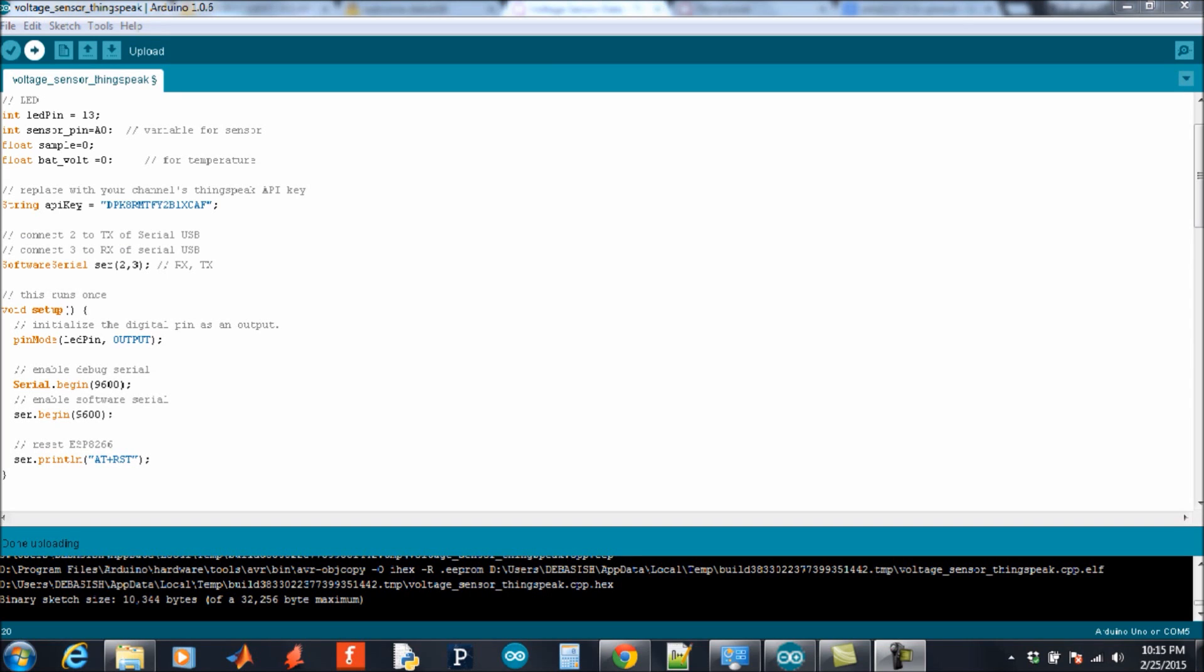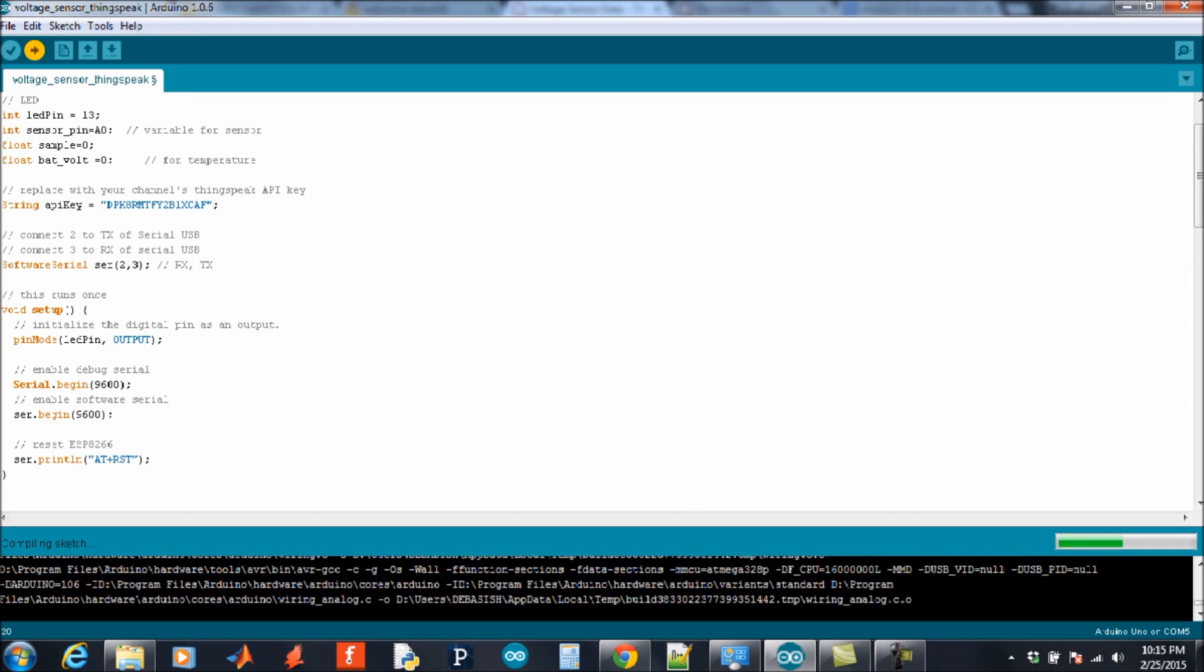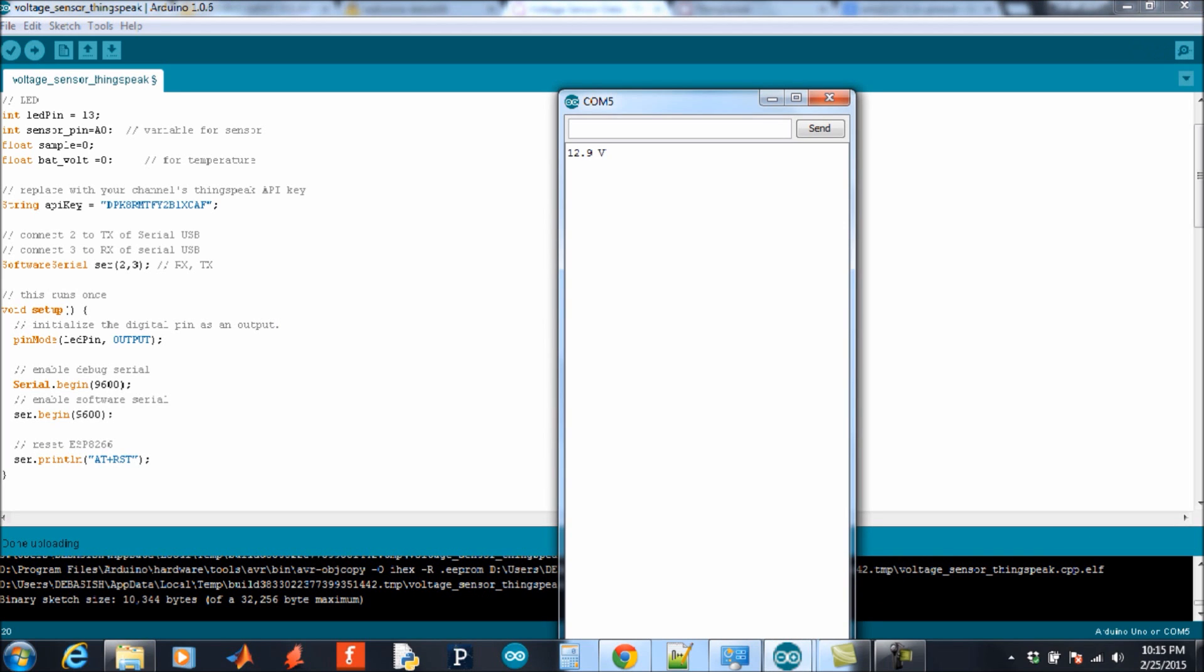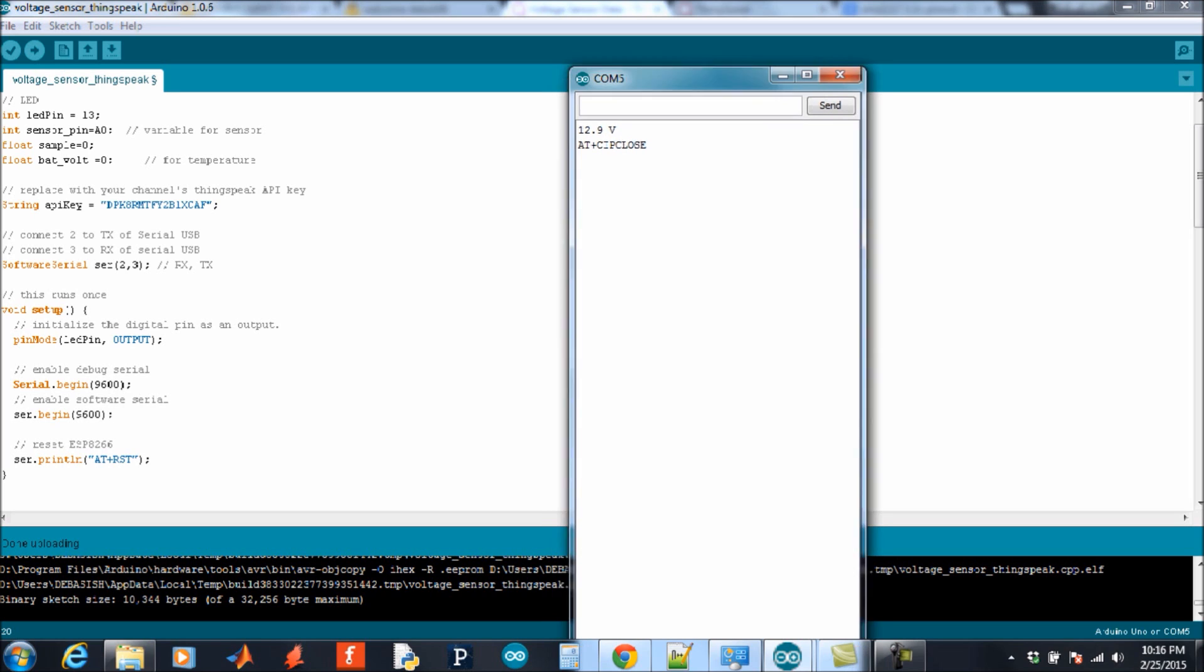Upload the test sketch. Let's see now, first the voltage value I am getting in my serial monitor. It's around 12.9V. Here I have measured the voltage was 12.94V. That means I am getting almost the same value.